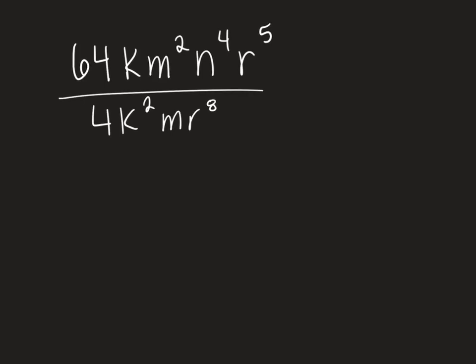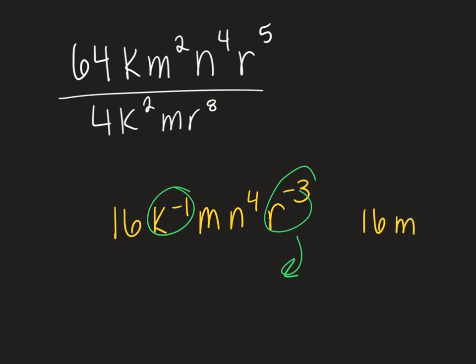So 64 divided by 4 gives you a 16. Our 16 is going to stay on top because that's where the bigger number is. Then we have k to the 1st divided by k squared, so we're going to do 1 minus 2, which is negative 1. Then we're going to do m squared divided by m, which is m. And there's no n to divide by, so n to the 4th just stays. Then we have r to the 5th divided by r to the 8th, so 5 minus 8 is negative 3. But now we need to take our negative ones and put them on the denominator. So we have 16mn to the 4th over kr to the 3rd.